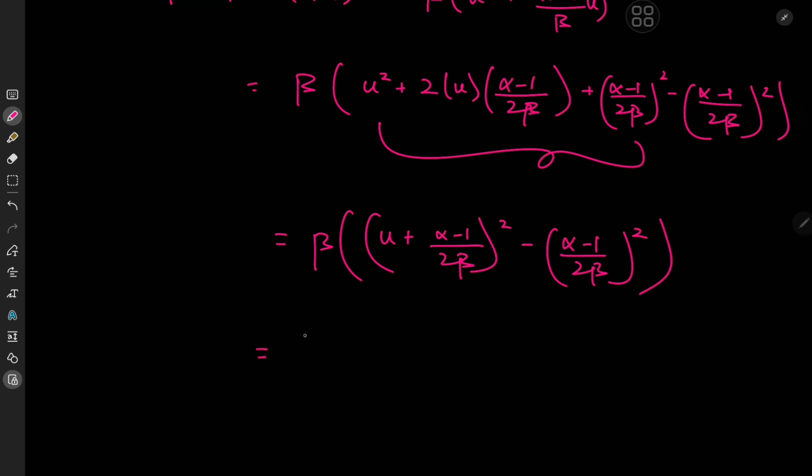And now expanding by multiplying by beta, we have beta times u plus alpha minus 1 divided by 2b squared, minus alpha minus 1 squared, divided by 4 times beta.